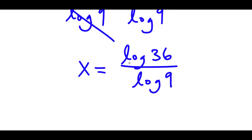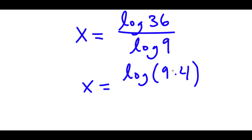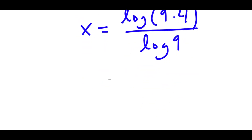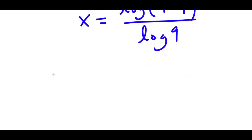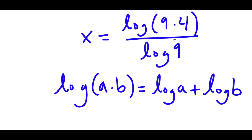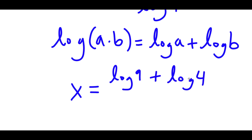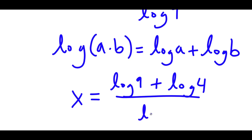Now, log 36 — I can rewrite that as log of 9 times 4. So I have this over log 9. And if I have something in the form log(a times b), this is equal to log a plus log b. So in this case, log(9 times 4) is going to equal log 9 plus log 4, and I have this over log 9.